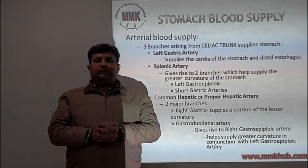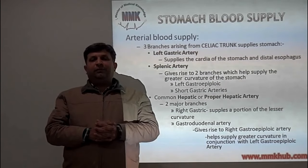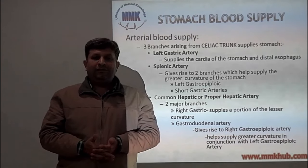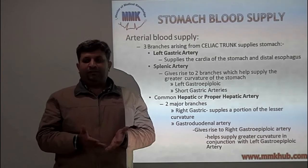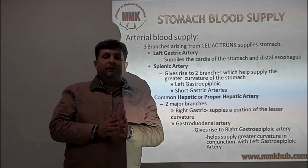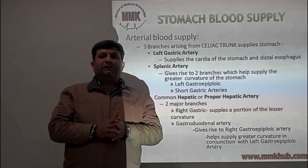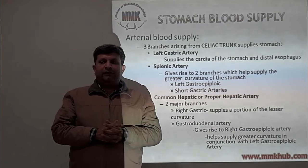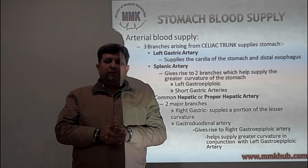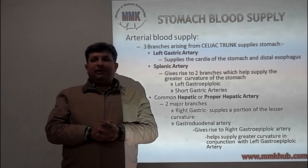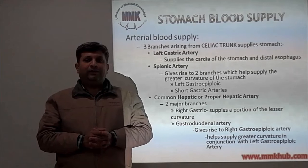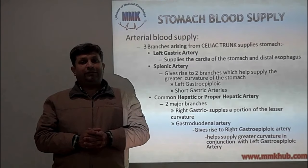Now the stomach blood supply. Arterial blood supply of the stomach is mainly from the aorta via the celiac trunk. The celiac trunk gives three branches that supply the stomach. First is the left gastric artery, which supplies the cardiac area of the stomach and the lower esophagus.